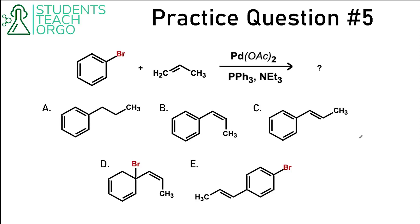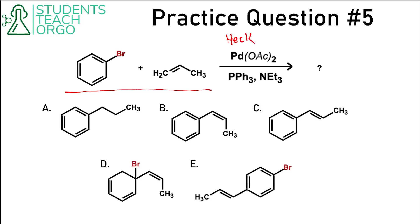Here is our first practice question — feel free to pause the video if you'd like to attempt it yourself. Looking at these reactants, I see we have an aryl bromide — an aryl halide — and we also have an alkene. Immediately I would know this is the Heck reaction, and looking at the reagents confirms they match what we saw on the earlier slide.